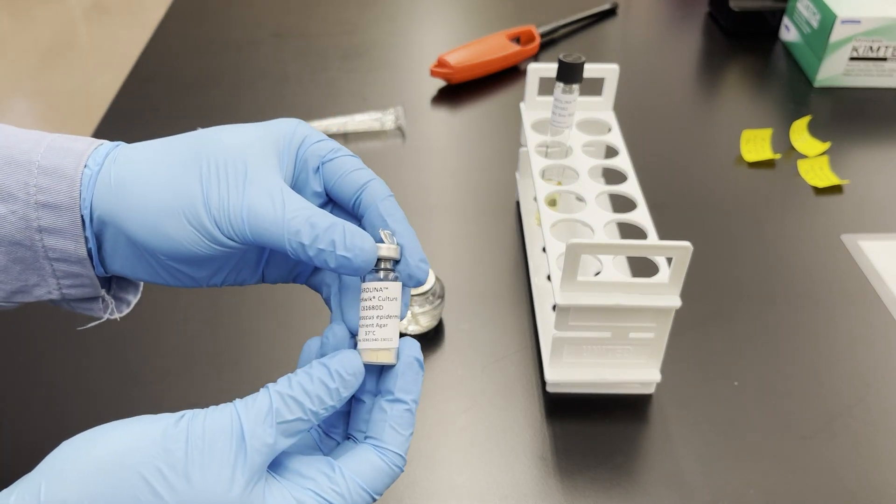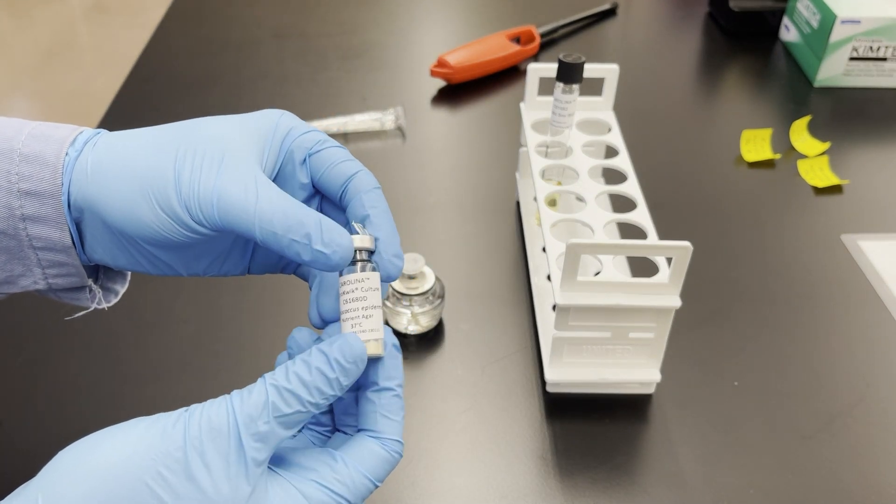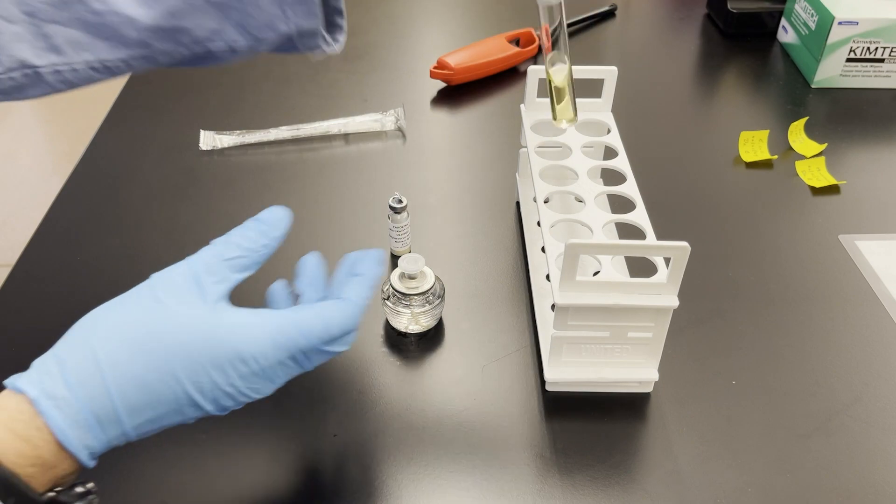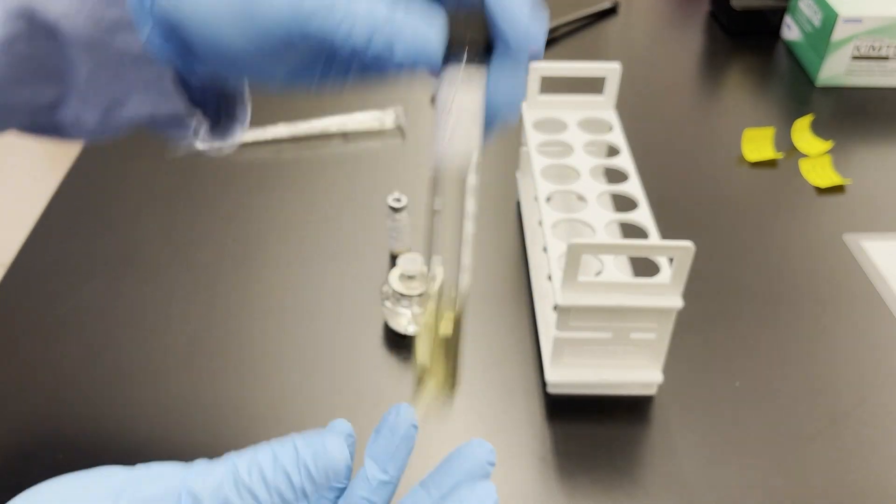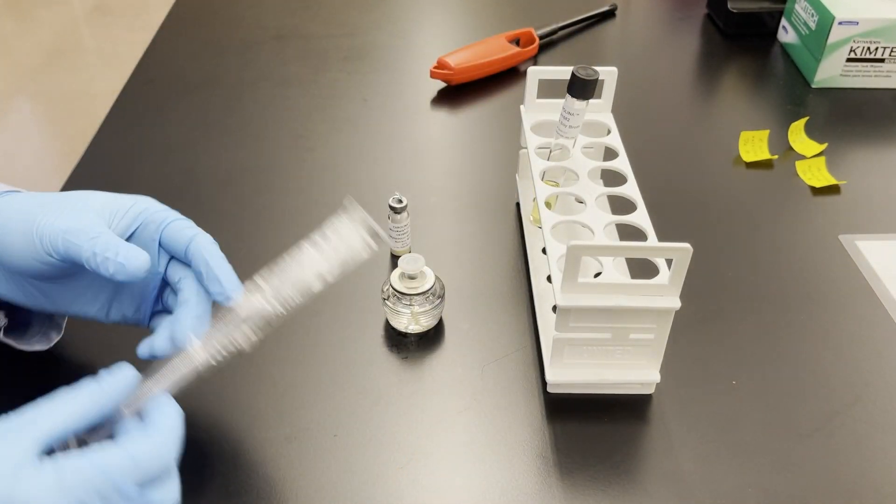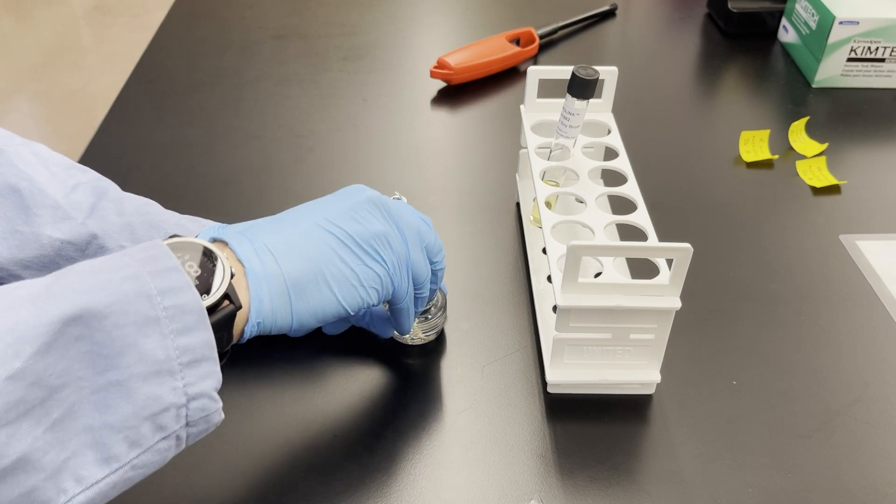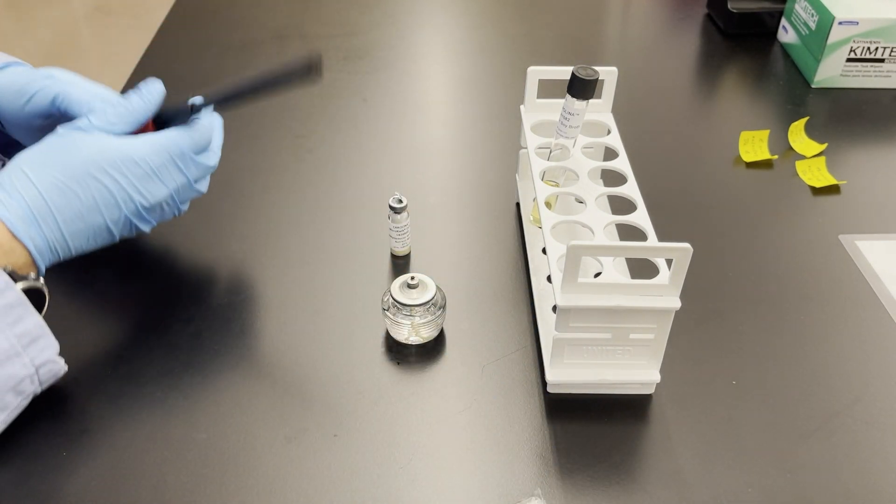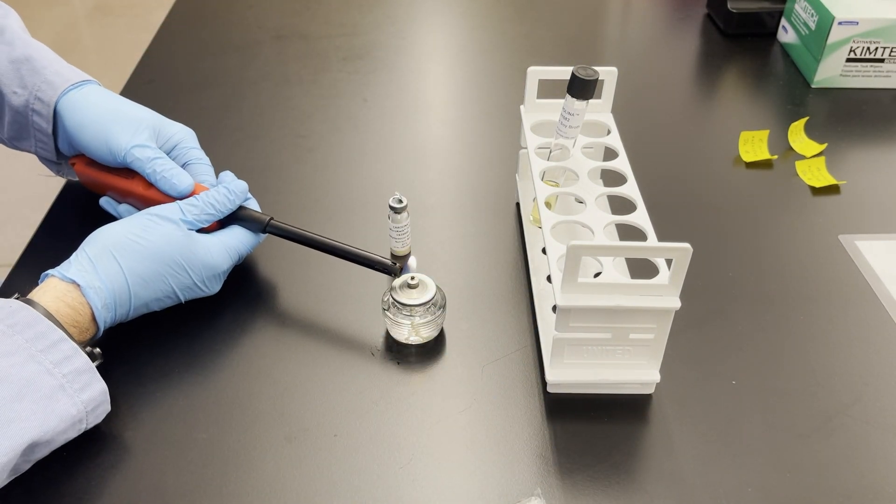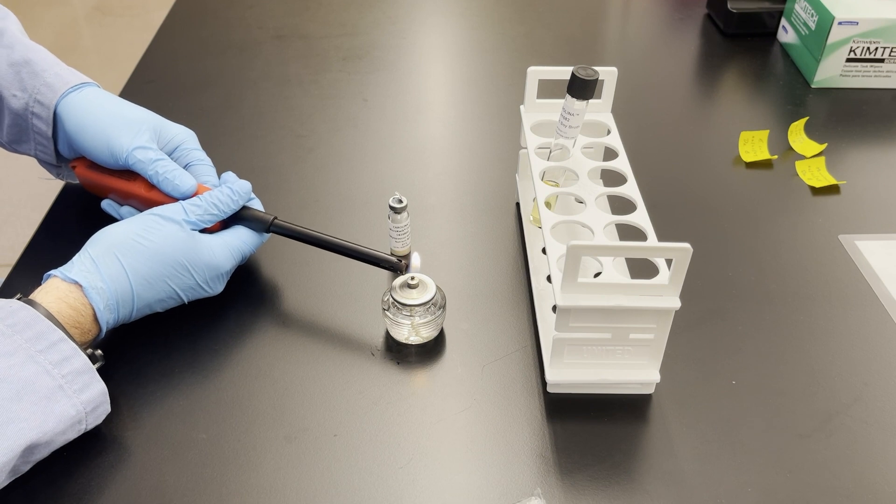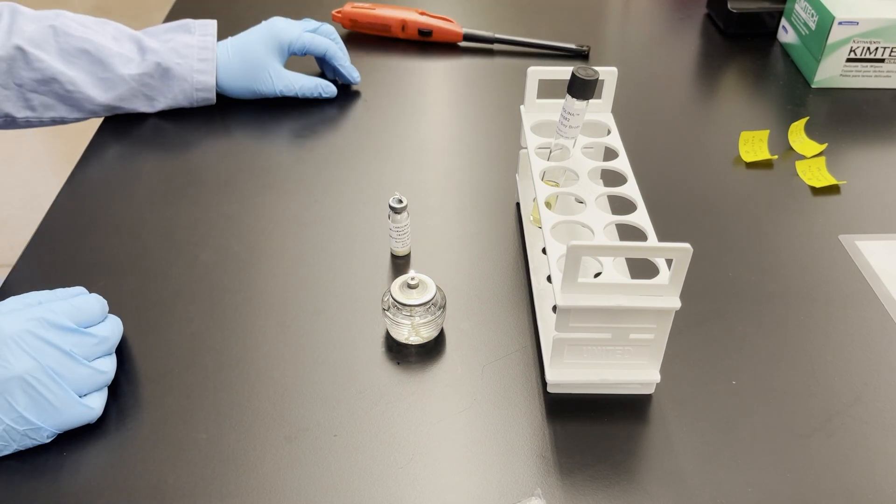Notice I have a container of lyophilized bacteria and the goal is to activate it and get it growing in this tube of broth. You're going to need your alcohol lamp and something to light it with. Just keep this on for the period of time you need to complete this activity. Don't leave an open flame on.